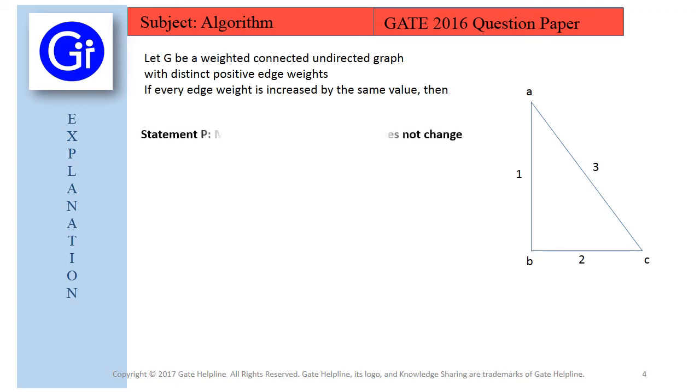The first statement is minimum spanning tree of G does not change. So what is minimum spanning tree? Minimum spanning tree is in which we need to connect all the vertices with the minimum edge weights.